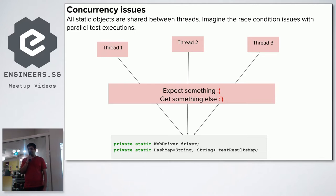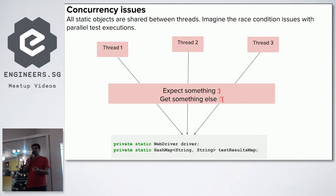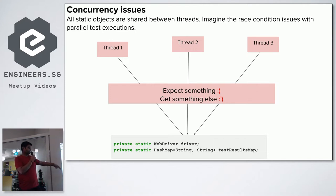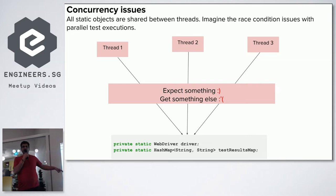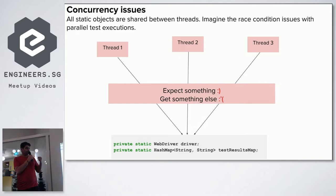One of the most critical issues in test automation frameworks is concurrency issues, because all static objects are shared between multiple threads. The kinds of issues caused by race conditions are significant. For example, if you have private static WebDriver driver and private static HashMap testResultsMap, when running tests concurrently, thread one might get a value meant to be read by thread two.